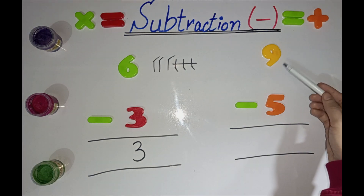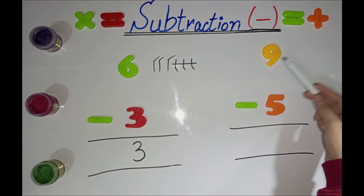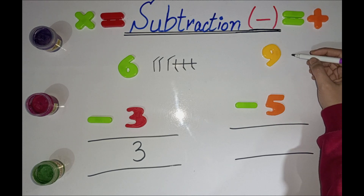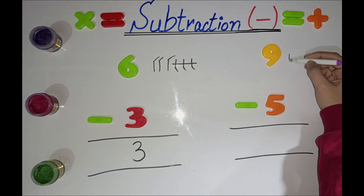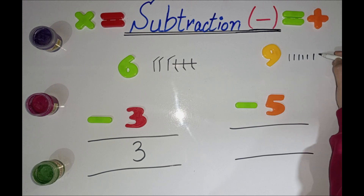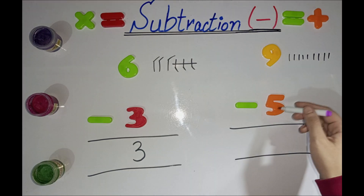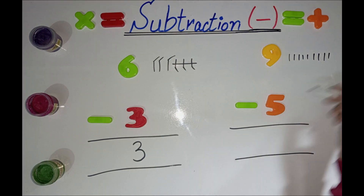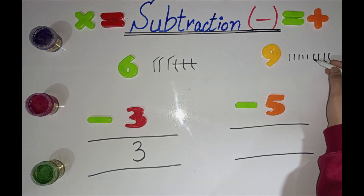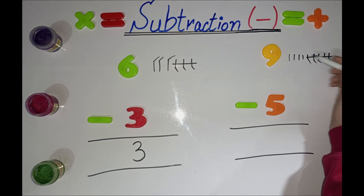Solve this question. What is this number? 9. Make 9 lines here. 1, 2, 3, 4, 5, 6, 7, 8, 9. What is this number? 5. 1, 2, 3, 4, 5. Cut 5 from these lines.